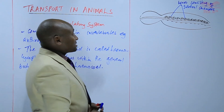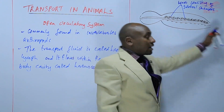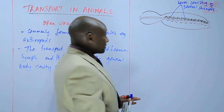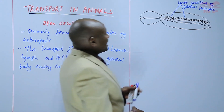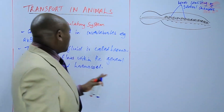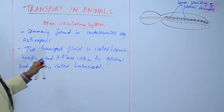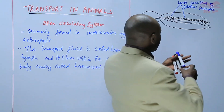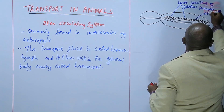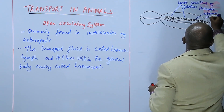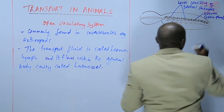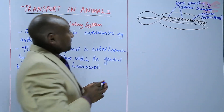Three of those chambers are in the thorax, while the majority of the chambers — that is, 10 — are in the abdomen. Each of those chambers has an opening through which the transport fluid, which is haemolymph, enters the heart. Those openings are called the ostium, or ostia in plural. When it is one, it's called the ostium; when there are many, they are called ostia.